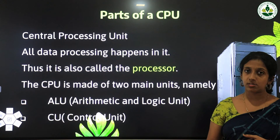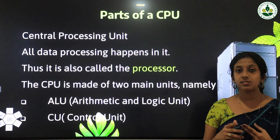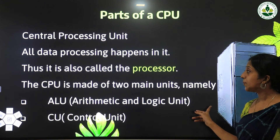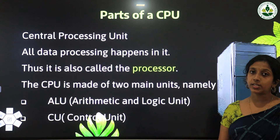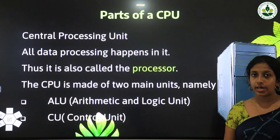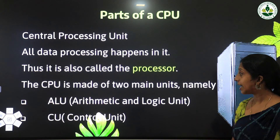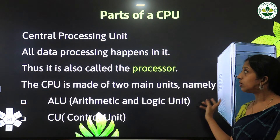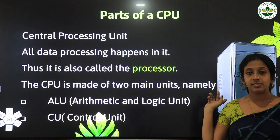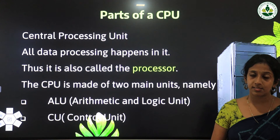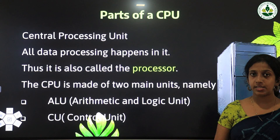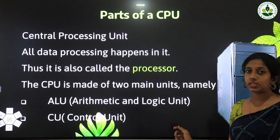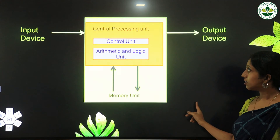Because data processing happens inside the CPU, it is also called the processor. The CPU is made up of two main units, namely ALU and CU. ALU means Arithmetic and Logic Unit, and CU means Control Unit.